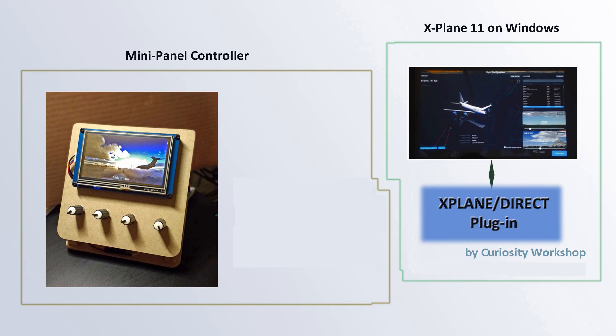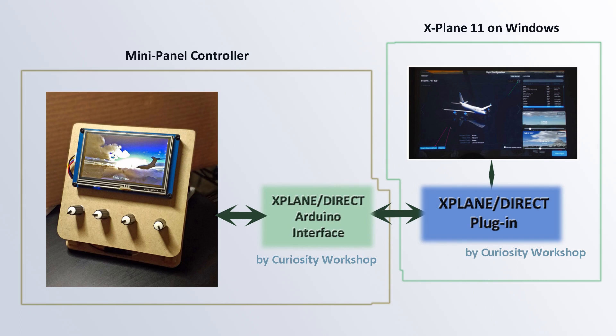There are two parts to it. The first part is the plugin itself, shown on the right — you put that under your X-Plane resources folder. The part on the left is the interface class; you get it as a couple of Arduino source files and build that code into part of your mini panel firmware. XPlane Direct lets your controller code manipulate a data ref just by reading or writing to a variable.